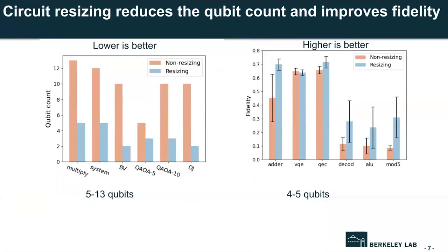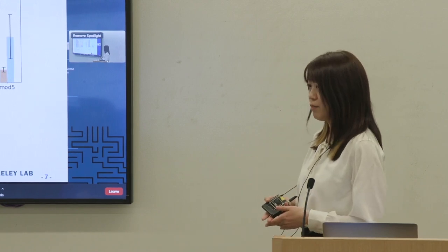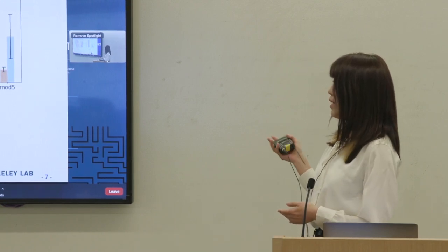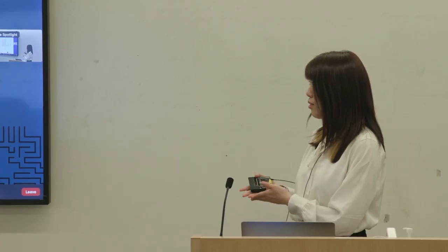Let's take a look at some results. For the figure on the left-hand side, the x-axis are some circuits with 5 to 13 qubits, and the y-axis is the qubit count. We can see our resizing algorithm can dramatically reduce the number of qubits. And for the figure on the right-hand side, the x-axis are some small circuits, since we want to execute them on the quantum hardware. And the y-axis is the fidelity of the circuits after execution, and higher is better. We can see our resizing algorithm can improve the fidelity of the circuit.